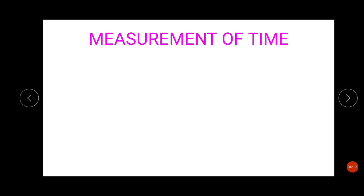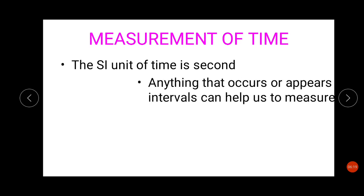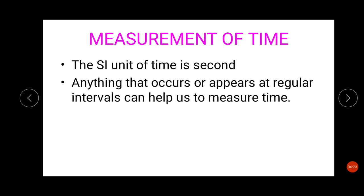Then comes the next topic, which is measurement of time. The SI unit of time is second. We all know this because we just discussed it. Anything that occurs or appears at regular intervals can help us to measure time. The sun, for instance, if we consider sun as an object which occurs daily at the same point of time, then we can use it to measure time. We all know the sun rises almost at the same time every morning. It never rises one hour late or two hours late. There is a little difference in minutes, but approximately every day the sun rises at the same time. So we can use the sun as an instrument or device to measure time.